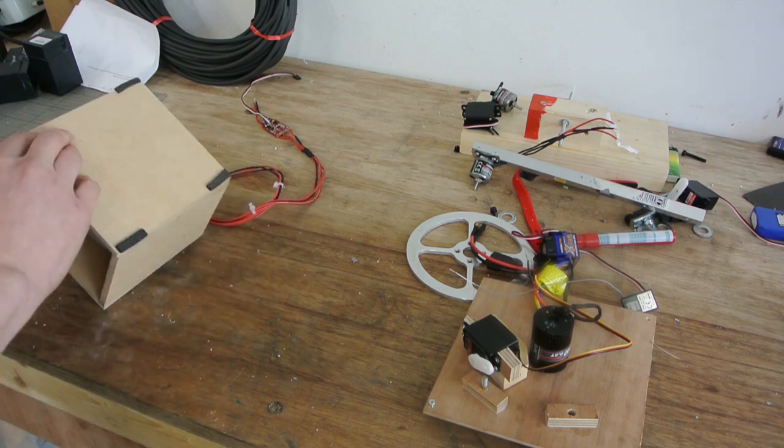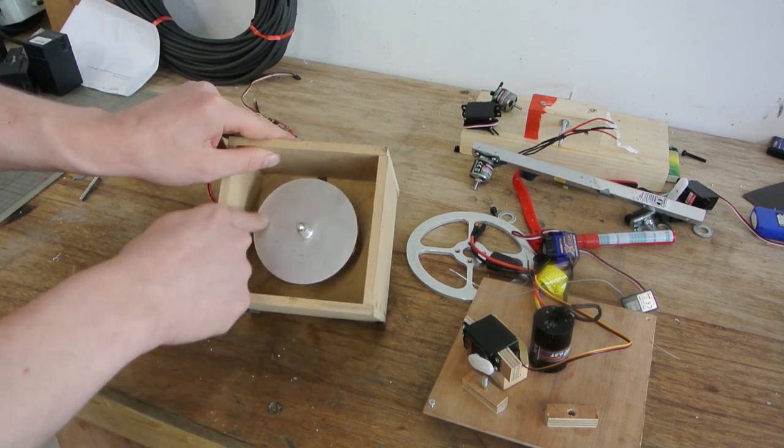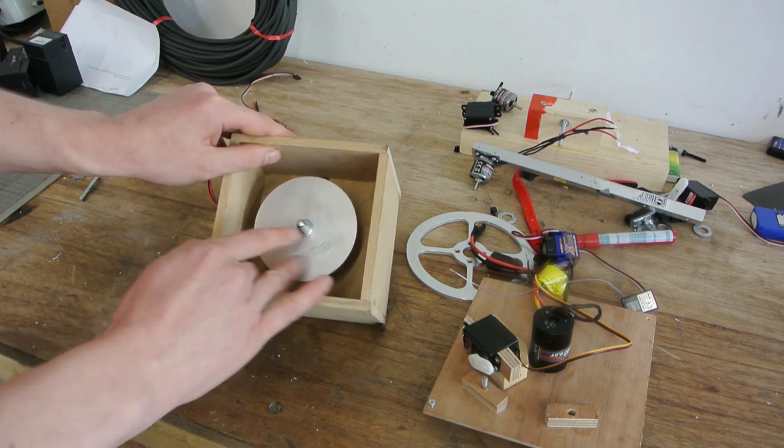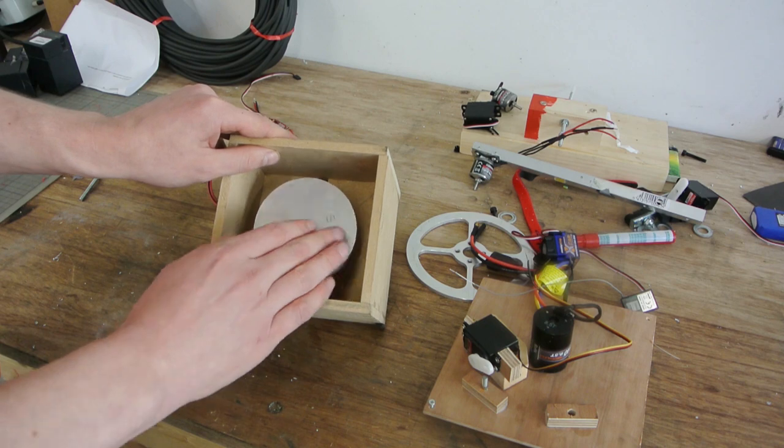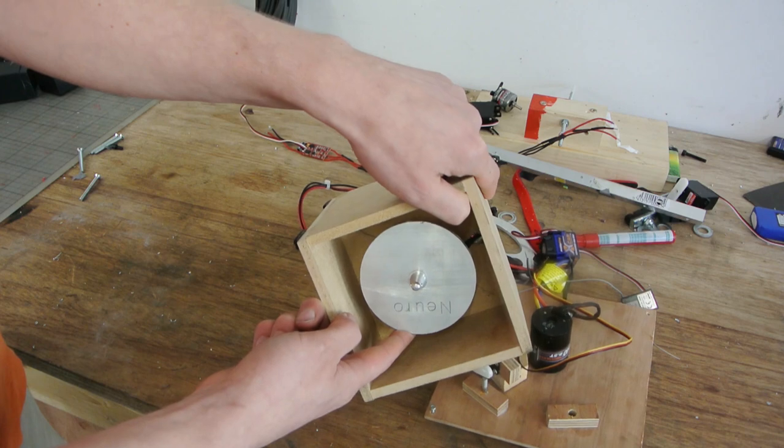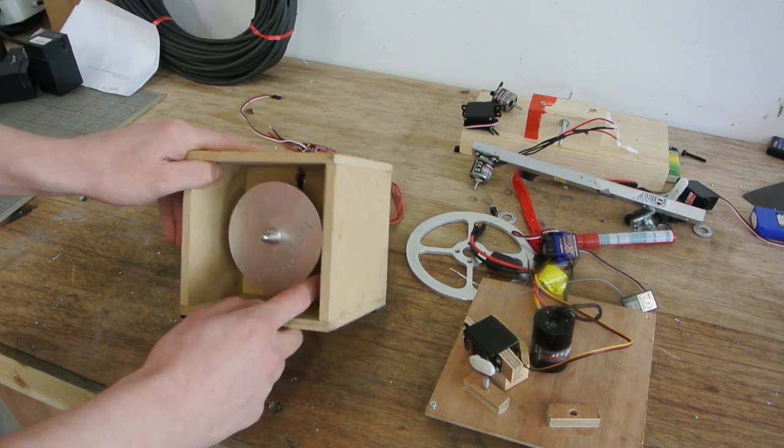In the cube I'm gonna put a flywheel connected to a motor. When the flywheel starts rotating it's gonna store a lot of kinetic energy. When you brake the flywheel that kinetic energy has to go somewhere and it should flip the cube. That's the plan anyway.